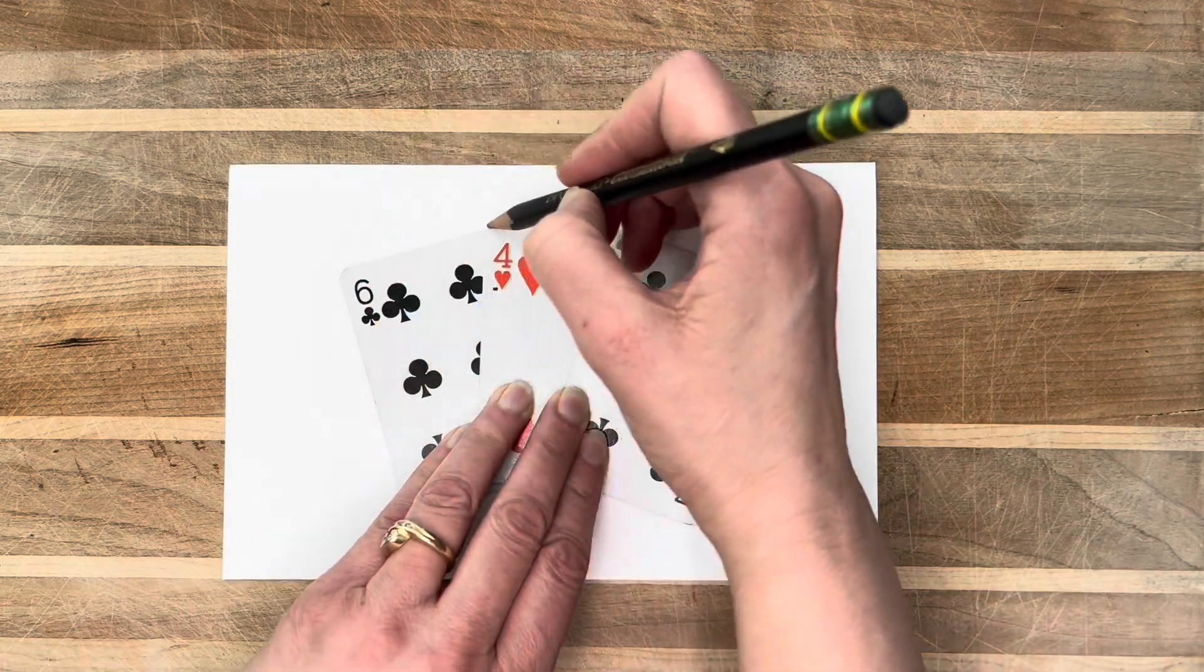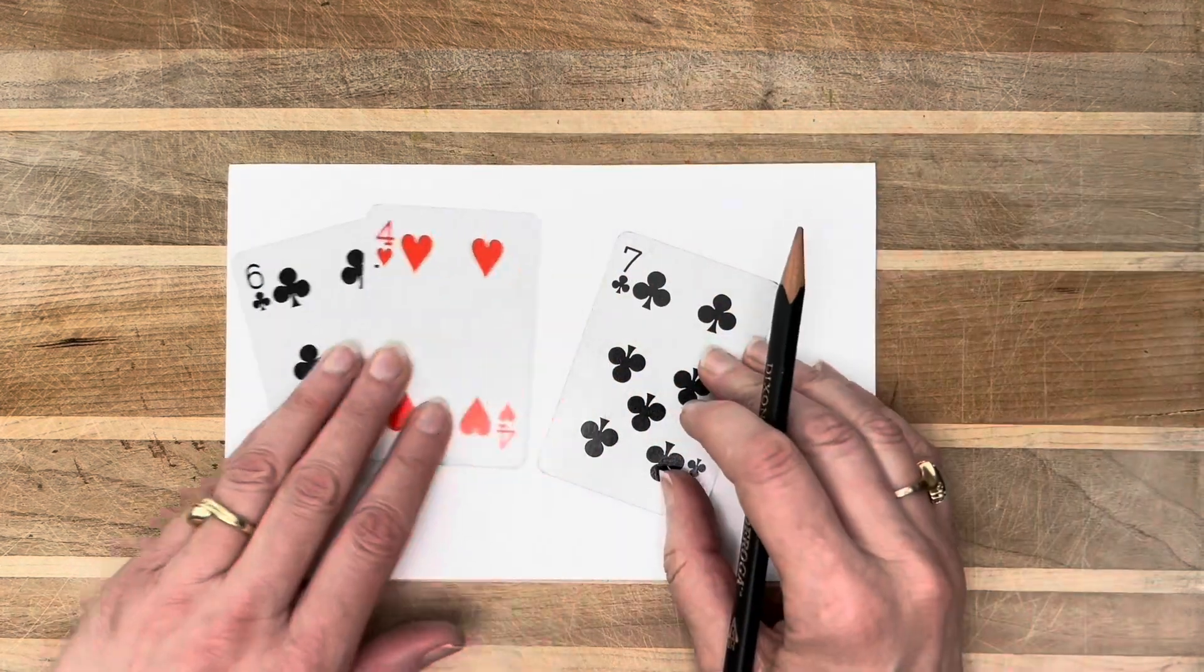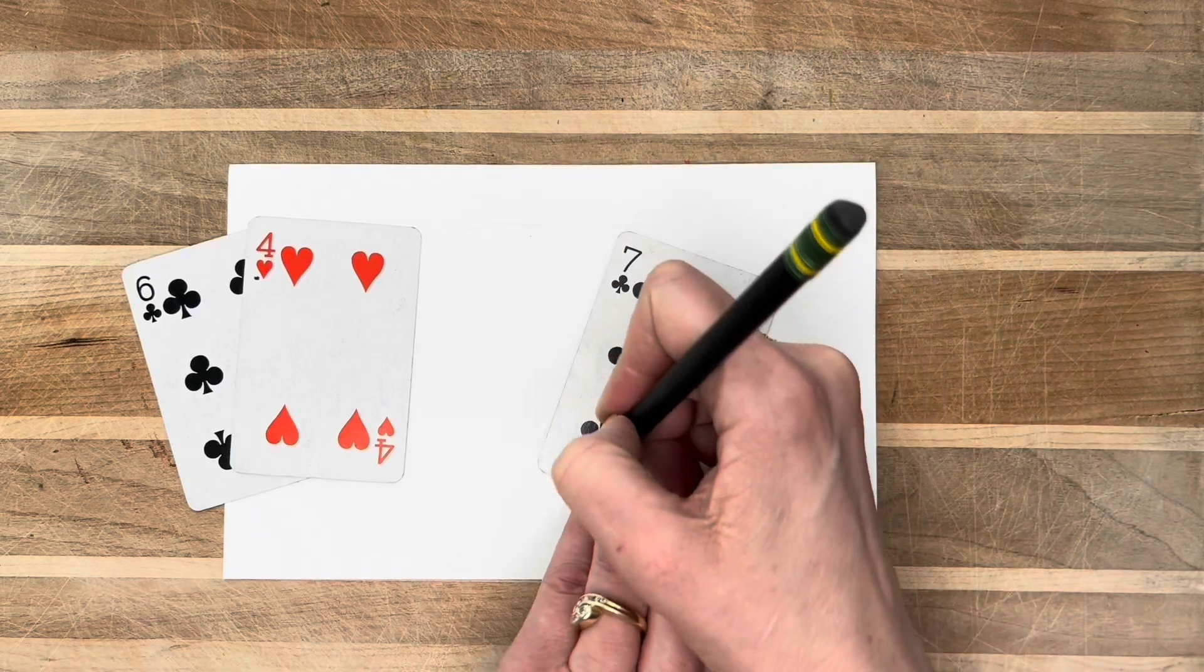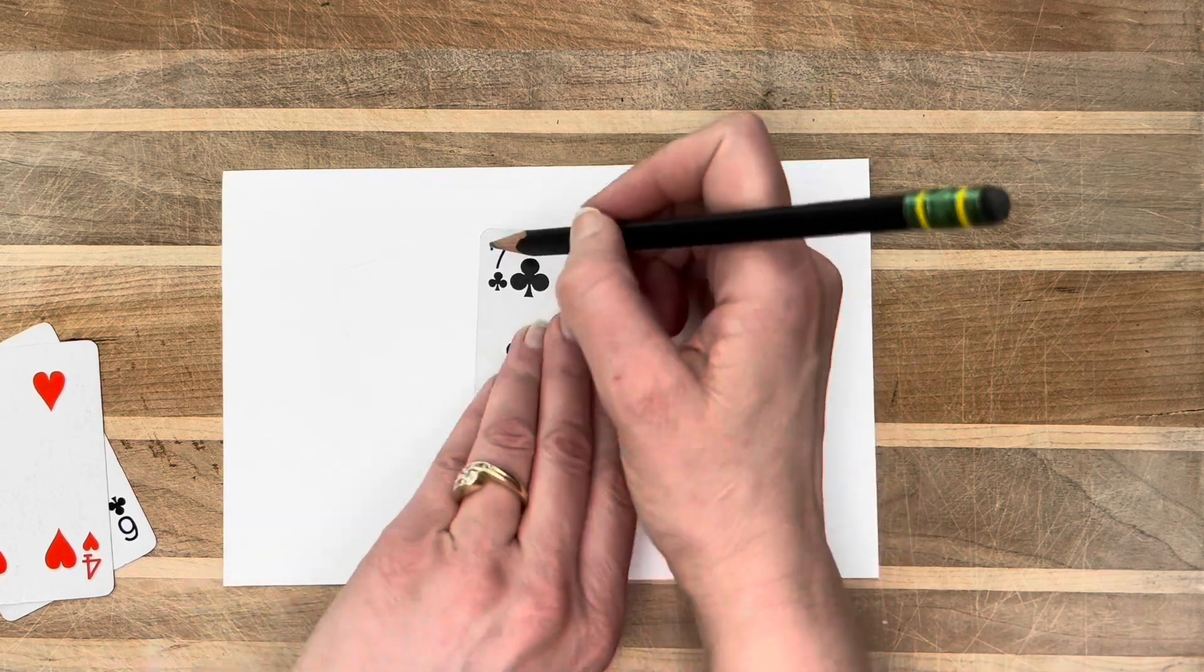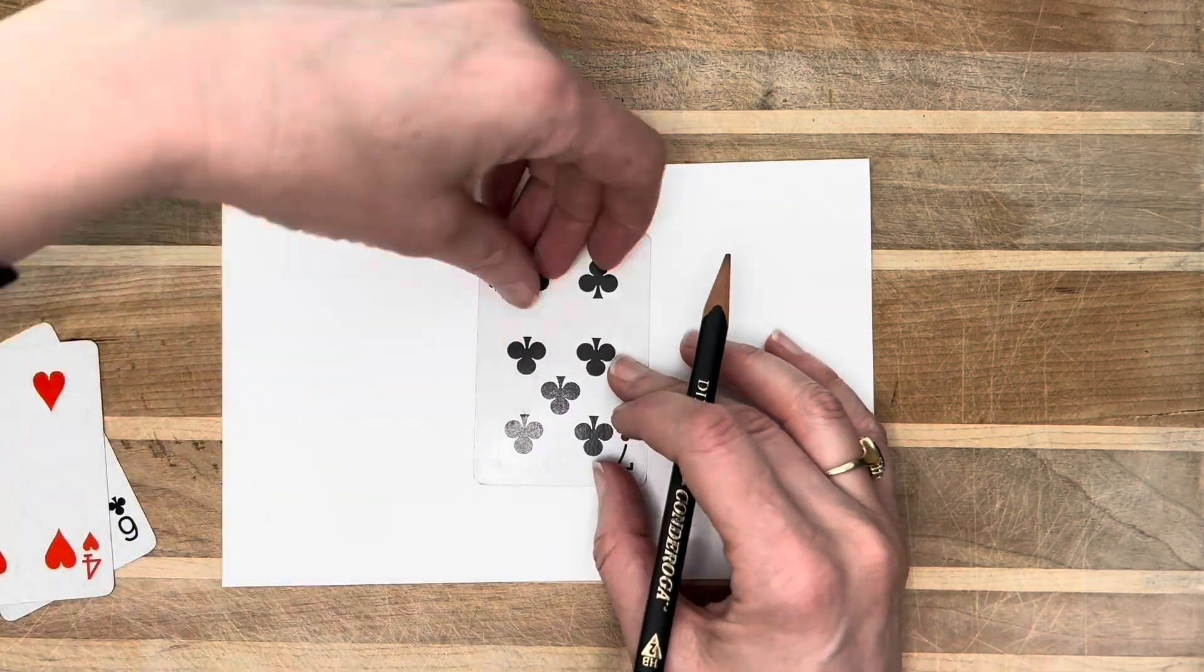I started by dealing a hand with one card for each letter that I was going to be writing. So for my father I call him dad and I dealt three cards. One for a D, one for an A, and one for a D.